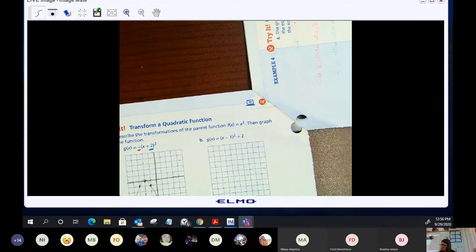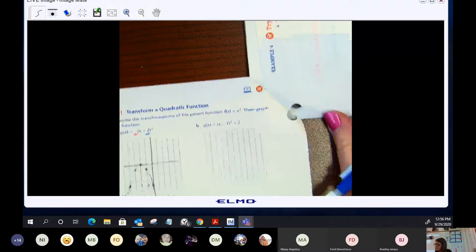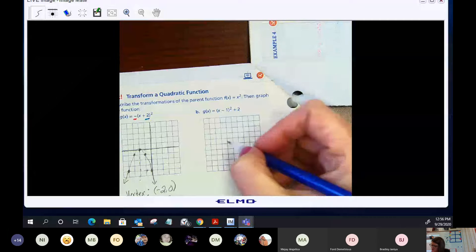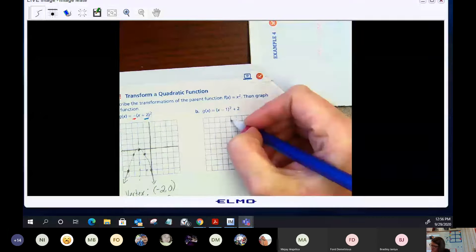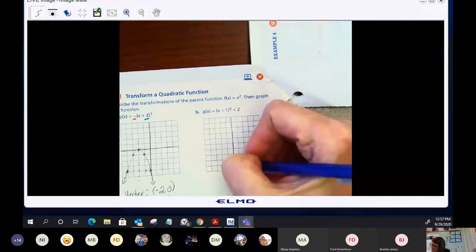Okay, let's take a look at Try It B. We're going to go ahead and graph this one without using a table of values. So let's just start out, let's put in our x and y axis.